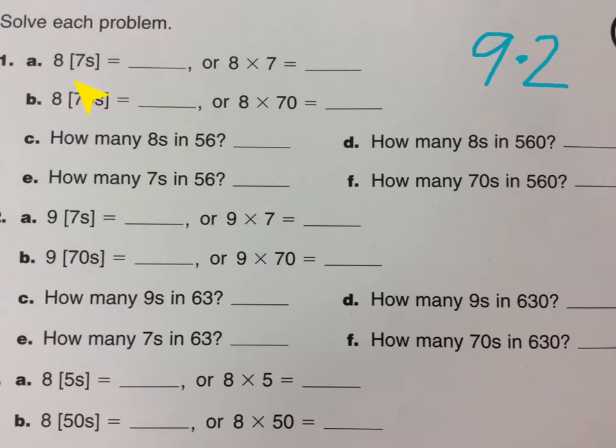First we have eight sevens, which is the same as eight times seven, and you should know that the answer is 56.